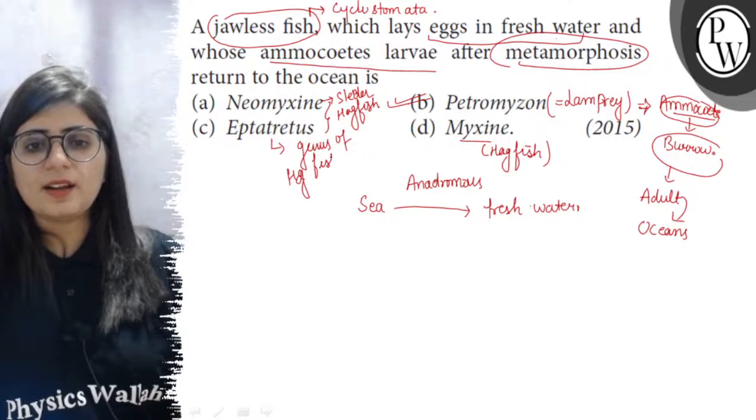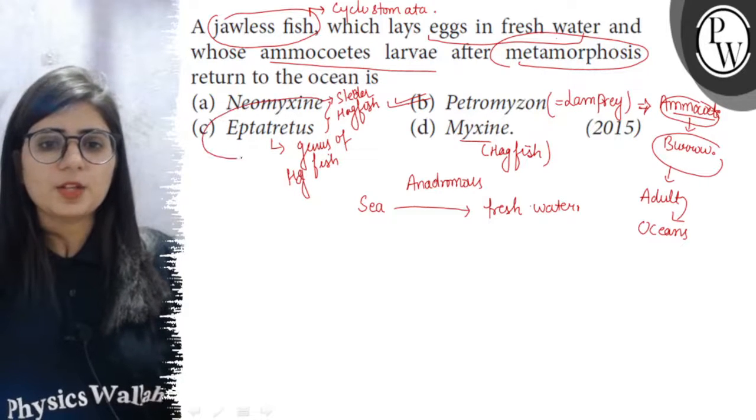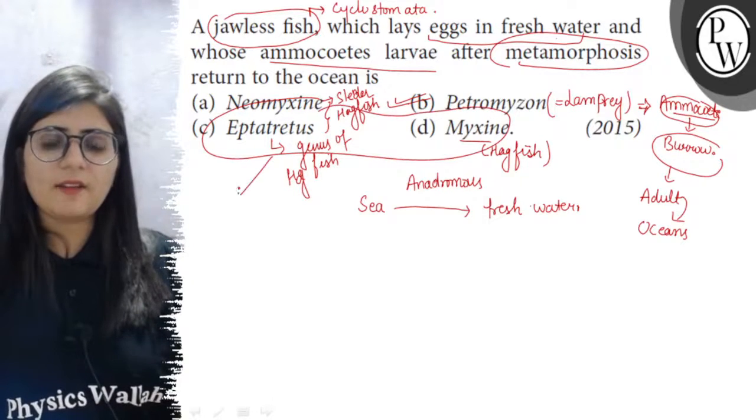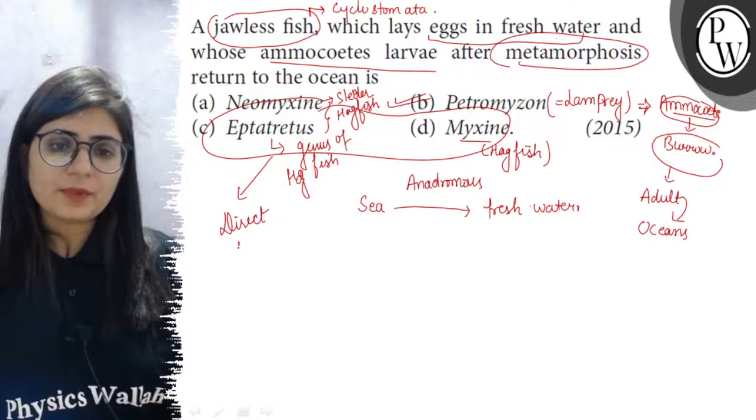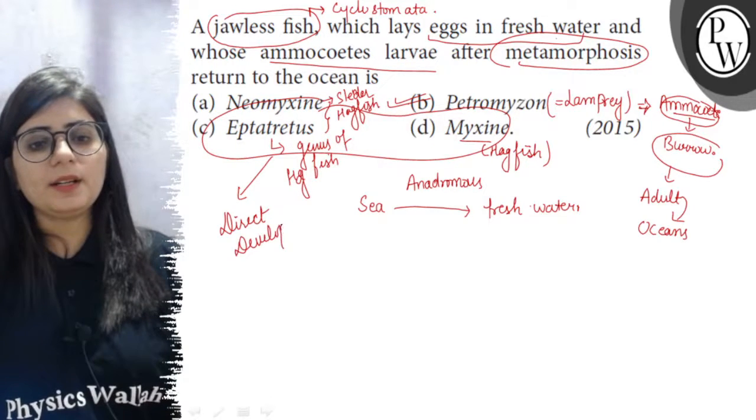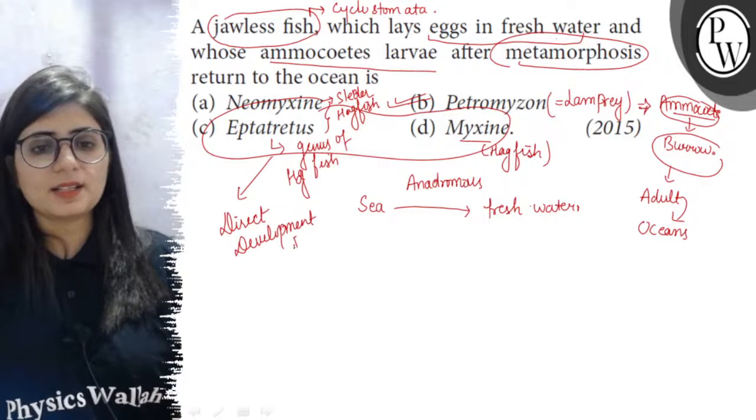And the Hagfishes are having direct development. So, all these three they are having direct development, and when we say they are having direct development it means the larval stage is absent.